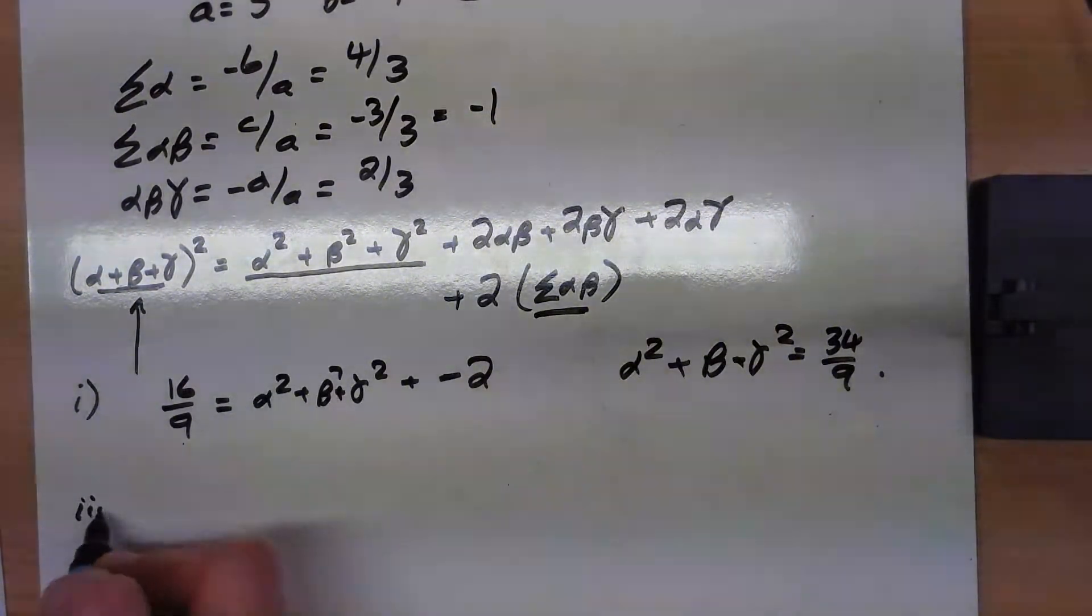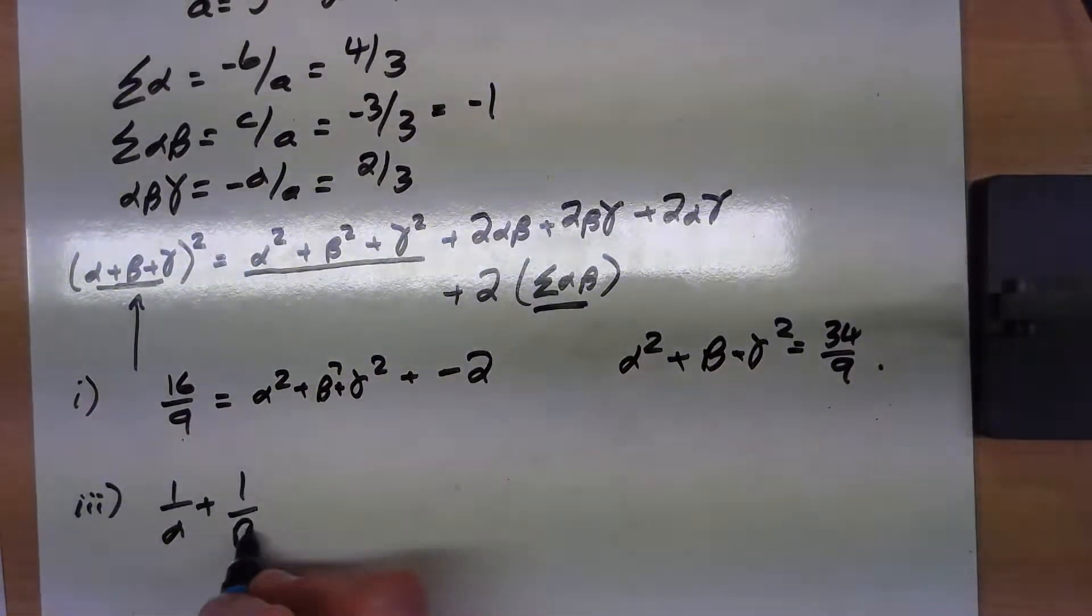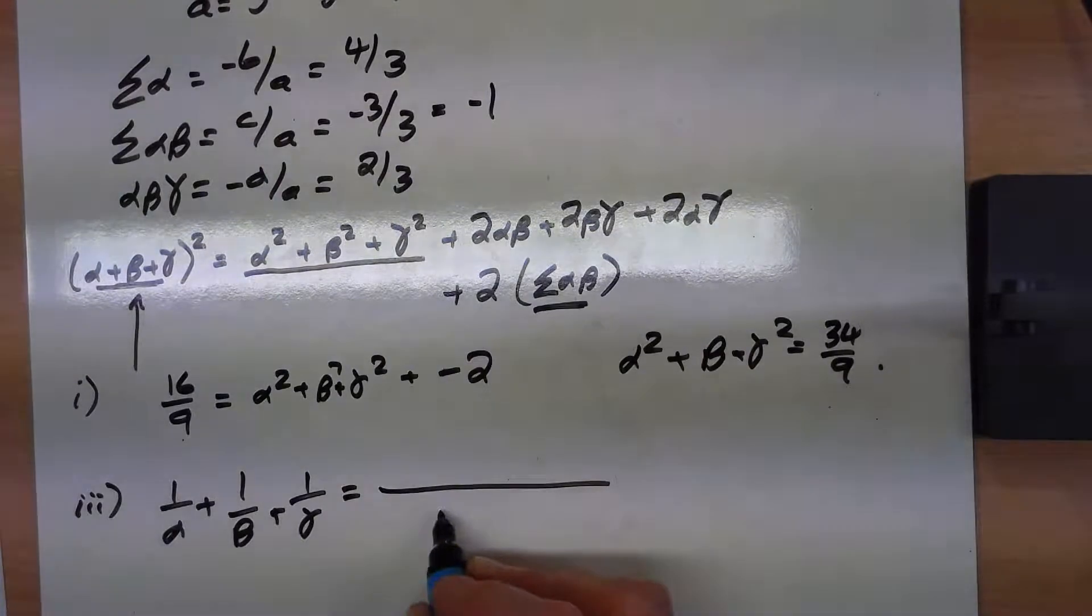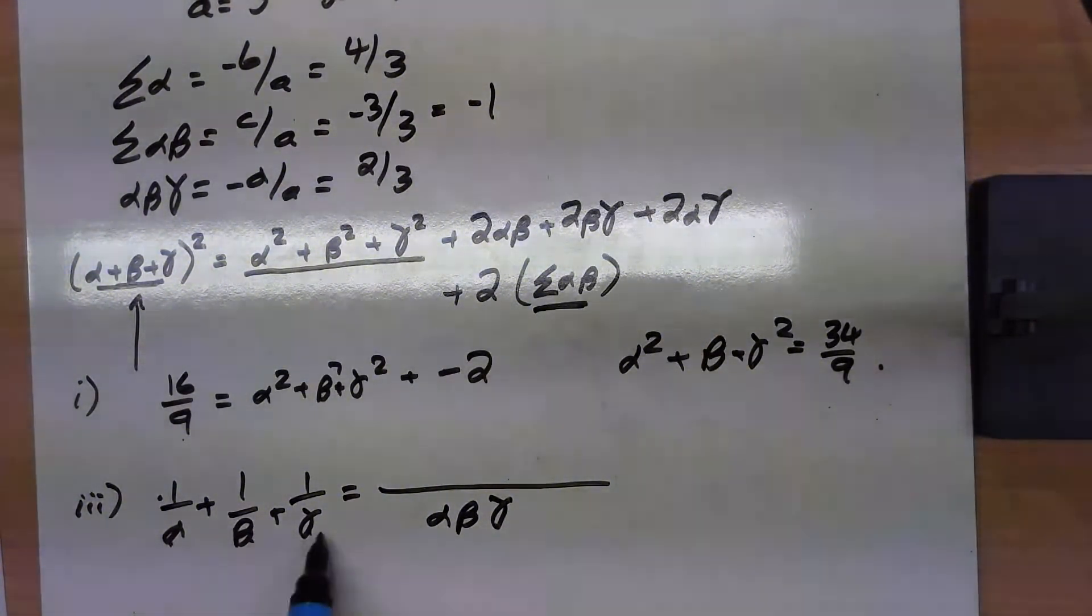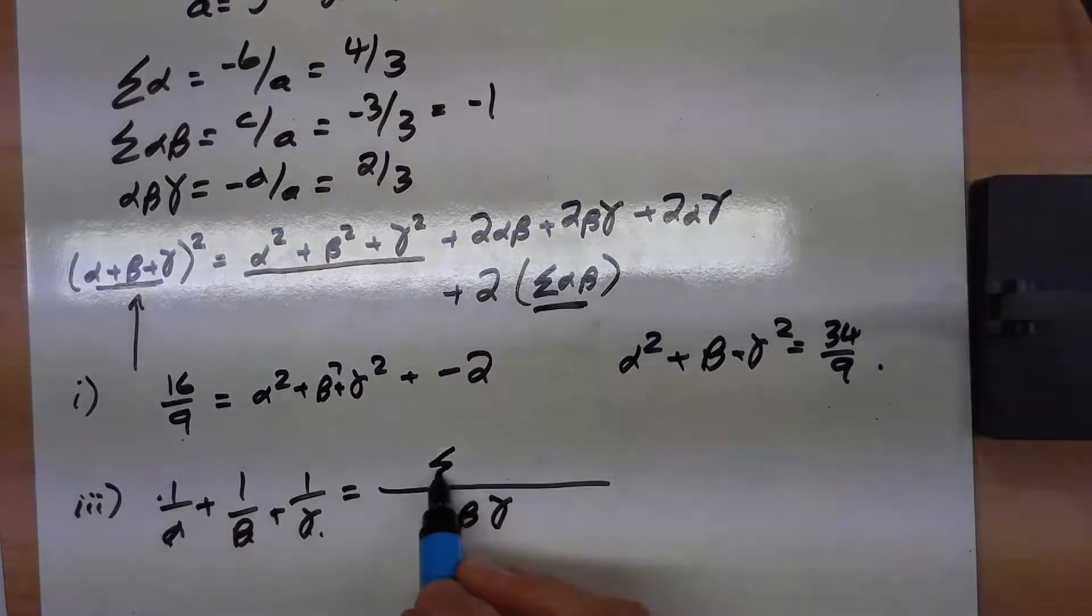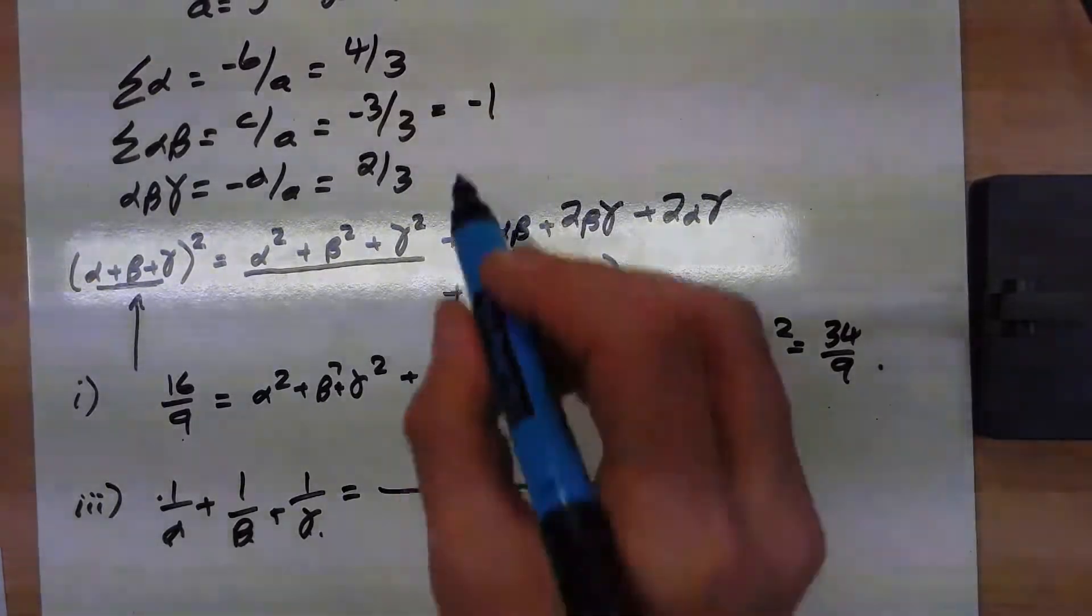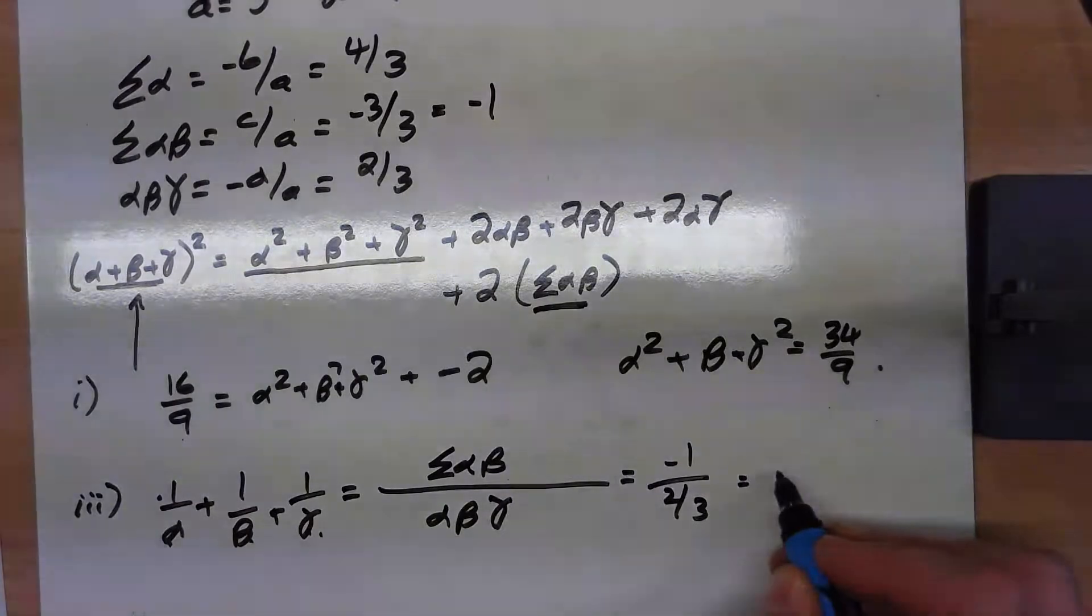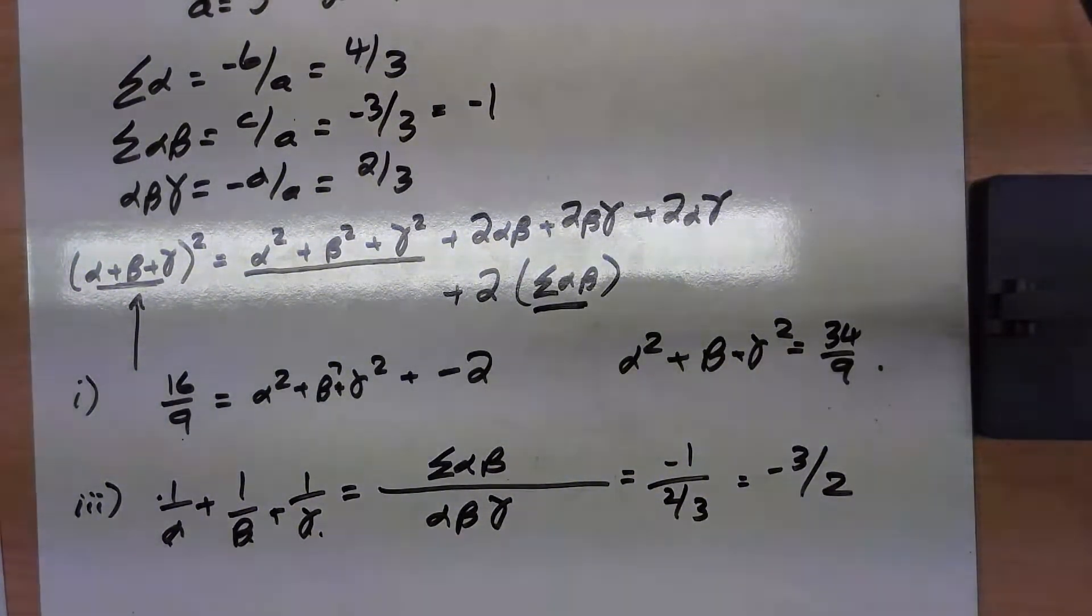And the third one with all of the reciprocals of them. The way you're doing that is, the common denominator is alpha beta gamma. This one here has been times by those two. This one by those two. So again, on the top here, we've got all the pairs of them. That we had earlier was minus 1. That we had earlier was 2 thirds. So the answer to that one is minus 2 over 3, minus 3 over 2.